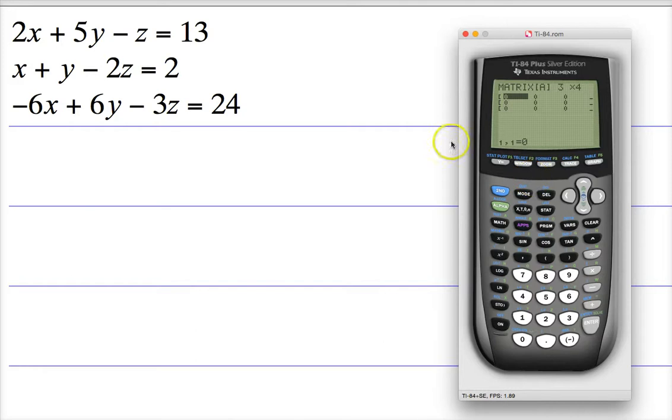A couple things that you should know: if you don't see a number and the variable exists anyway, this is 1x, so I need to put 1 in my matrix. And anything that says minus a number, you need to add that in as a negative, so for that minus z, it's really negative 1.